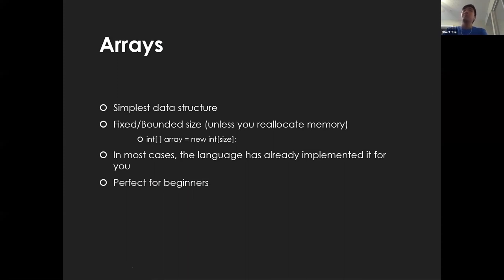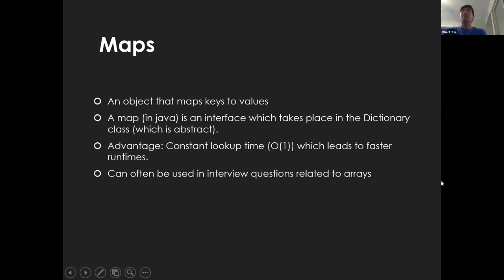We're going to start with arrays. Arrays are definitely the simplest data structure. They have a fixed and bounded size unless you reallocate memory, meaning you define the size at compile time. There are hard limits, so if you're indexing an array you need to make sure you're within bounds, or you'll get an out-of-bounds exception. Most languages like C and Java already implement this check, making it really foundational for beginners.